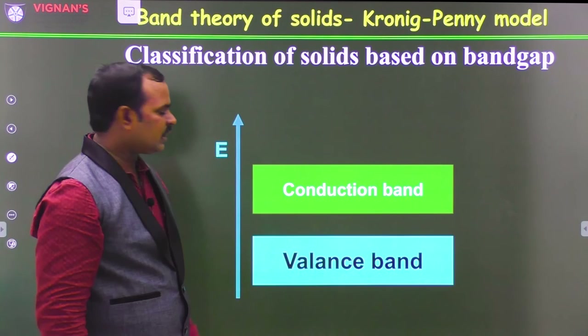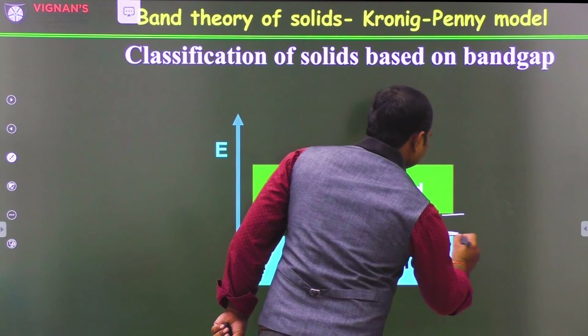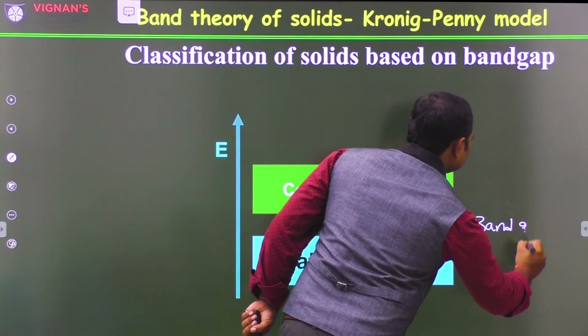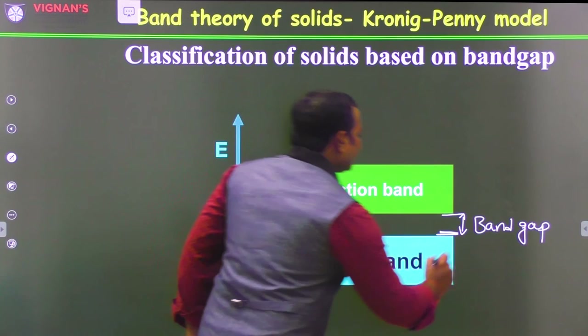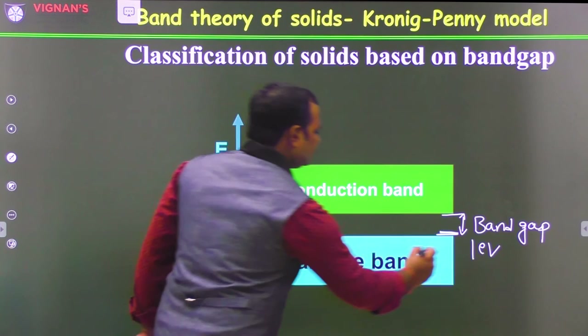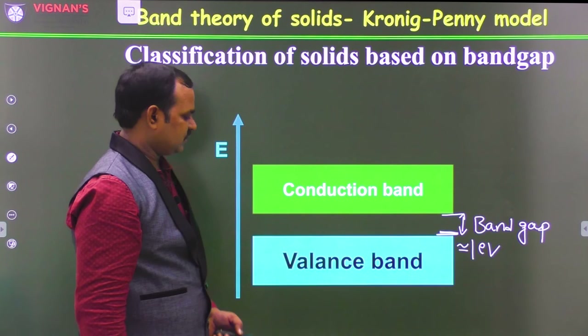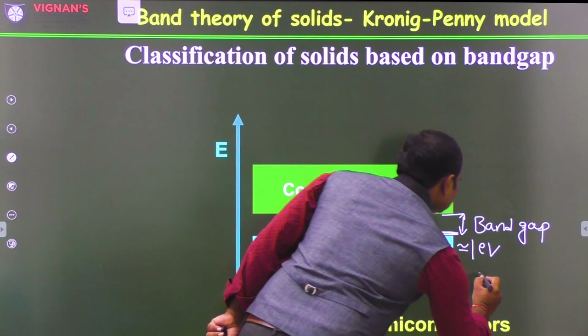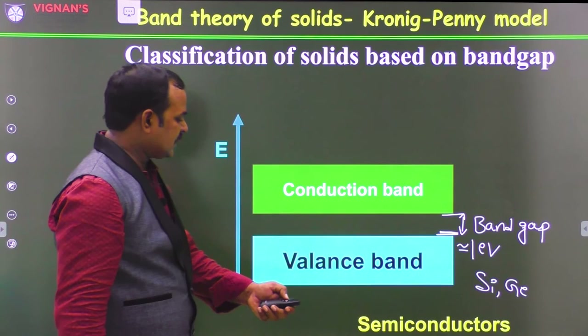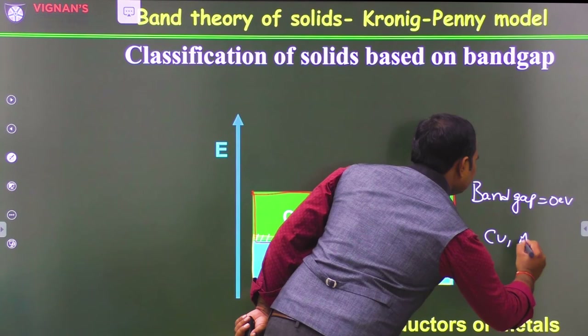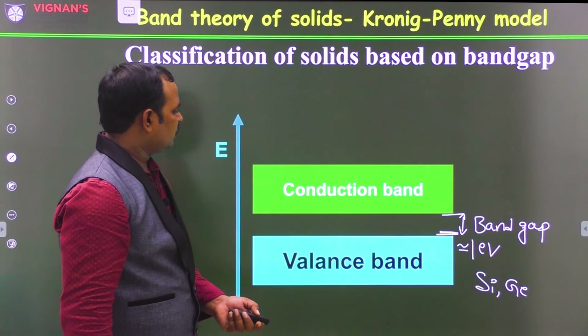In the case of semiconductors, the valence band and conduction band are well separated. The difference between the valence band and conduction band is the band gap. If the band gap is of the order of 1 electron volt, then we say they are semiconductors. Examples of semiconductors are silicon, germanium, etc. Examples of metals are copper, silver, aluminium, etc.